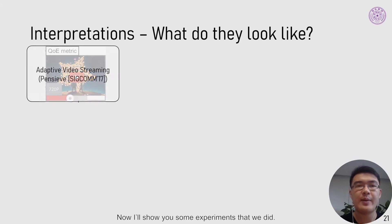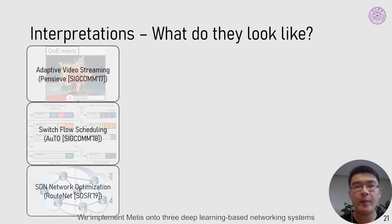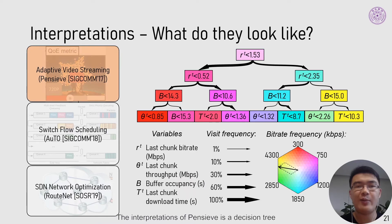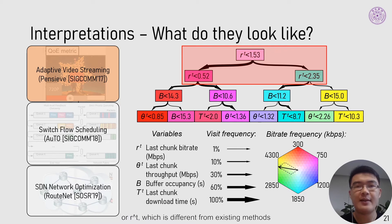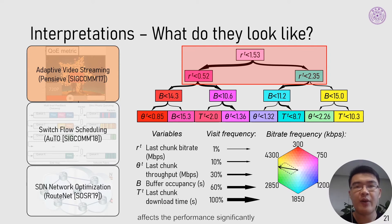Now I will show some experiments. We implemented Metis on a series of deep learning-based networking systems — two local and one global. The interpretation of Pencil is a decision tree. We can clearly see the decision logic from the figure. On the top two layers, Pencil first classifies inputs based on the last-track bitrate, or RT, which is different from existing methods. Metis discovers that the information contained in RT affects performance significantly.